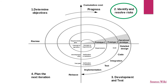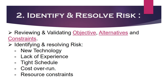After this, we move to the next phase, which is identifying and resolving risks. As we already know, spiral model is a risk-driven model, so there is a dedicated phase to identify and resolve risks. In this phase, all stakeholders review and validate the objectives, alternatives, and constraints planned during the first phase, and try to resolve the potential risks.